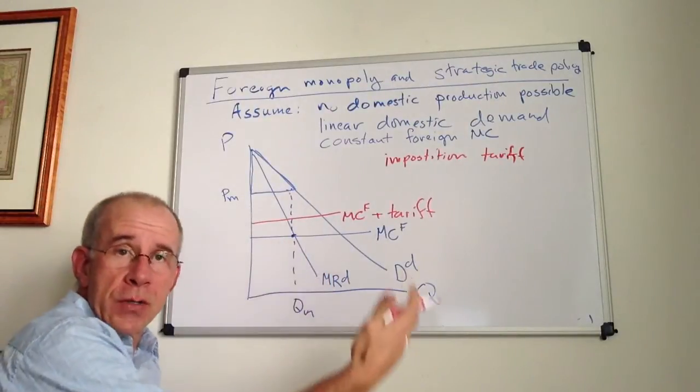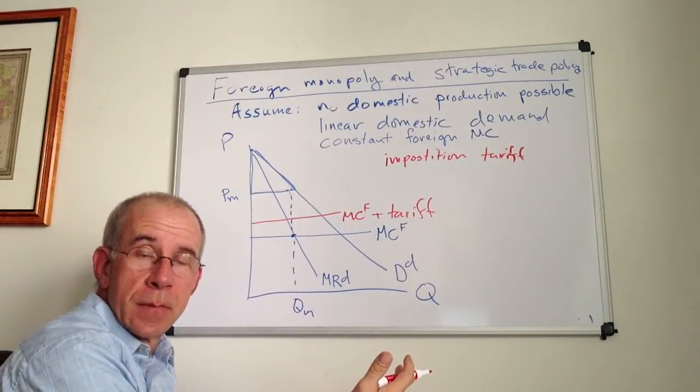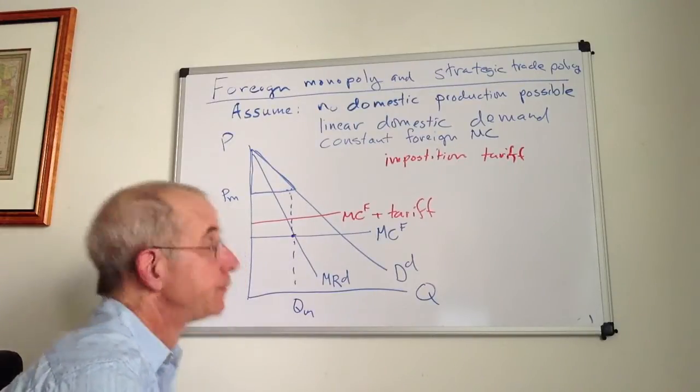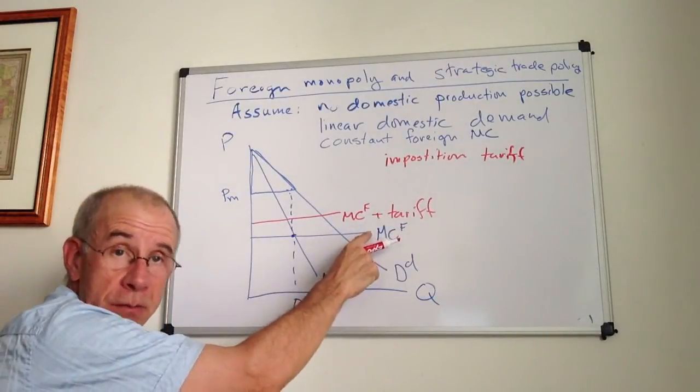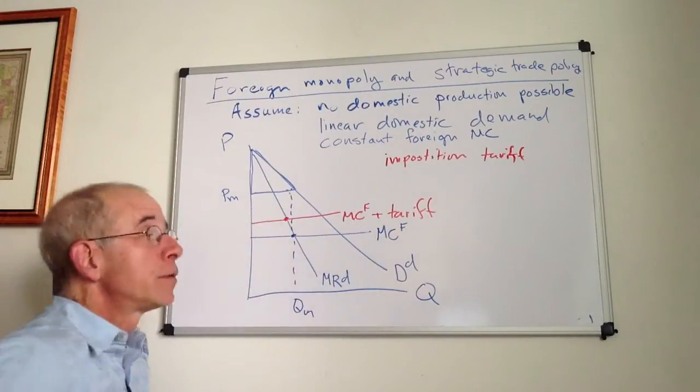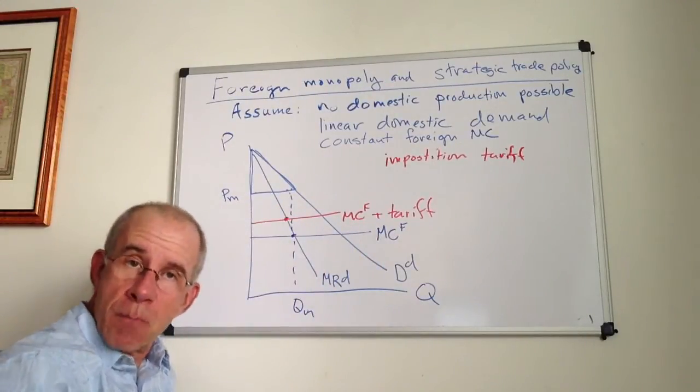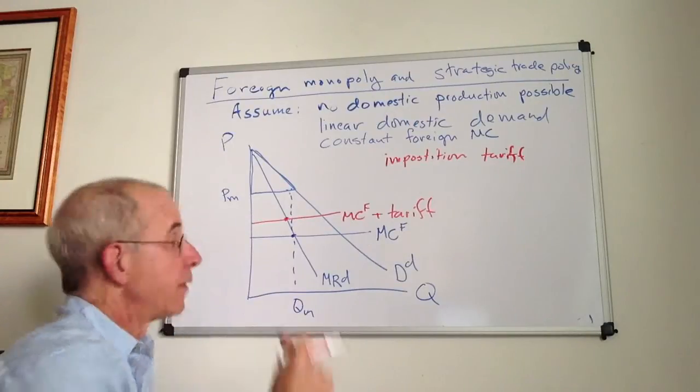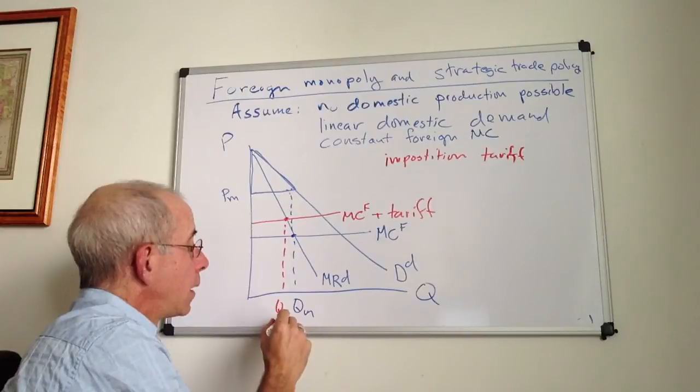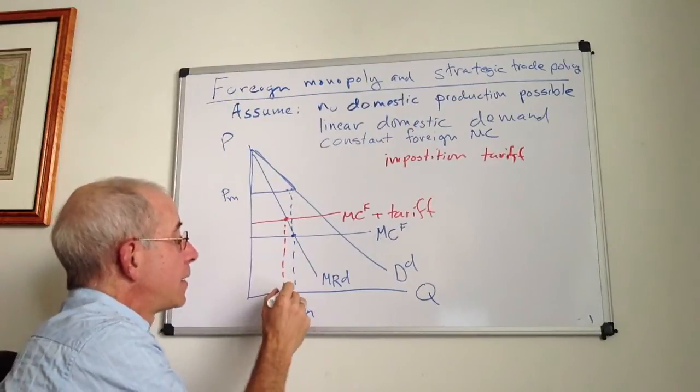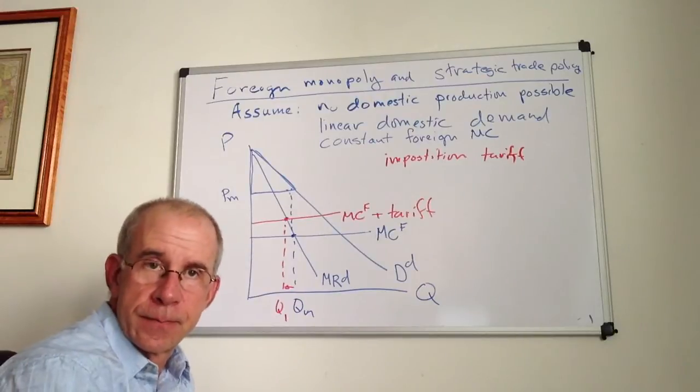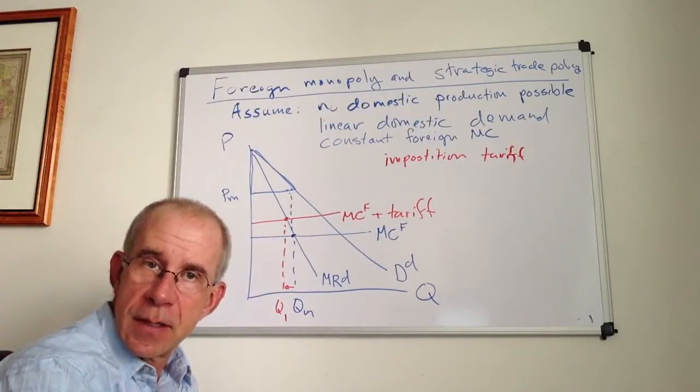They now look at where marginal cost is equal to the marginal revenue. Okay, the new marginal cost here reflected with the tariff. And they will choose that point. That's where marginal cost equals marginal revenue. And what you see is that they will reduce output in this market as a consequence of the tariff.